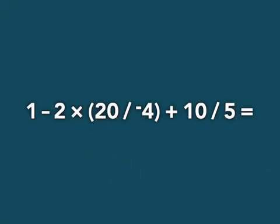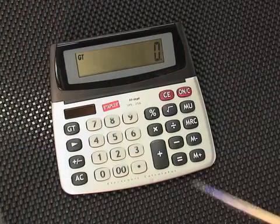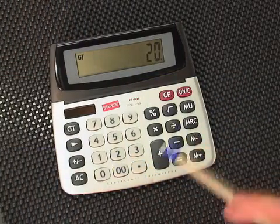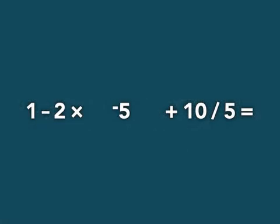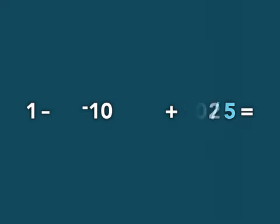An equation such as this one may look intimidating, but the order of operations will help you break it up into easier pieces. Since you must first calculate what's in parentheses, start by calculating 20 divided by negative 4, resulting in negative 5. Second, calculate the multiplication and division from left to right. 2 times negative 5 equals negative 10. And 10 divided by 5 equals 2.